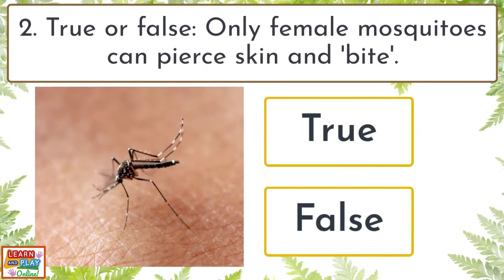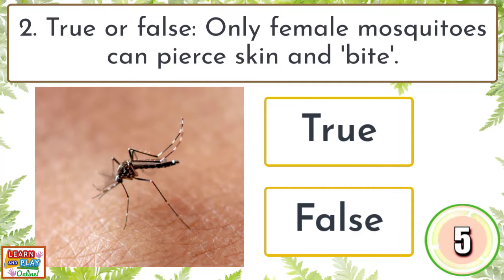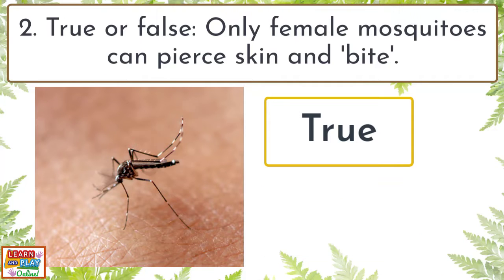Question 2. True or false? Only female mosquitoes can pierce skin and bite. True.